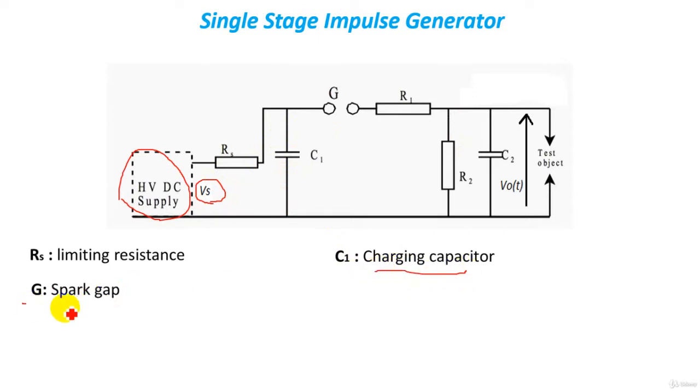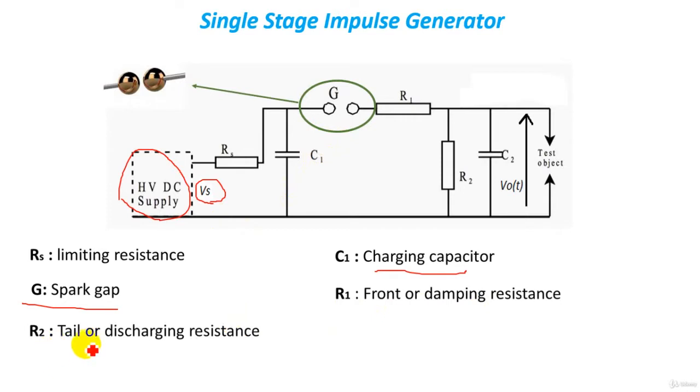We have also spark gap here. The spark gap here that was present in the Tesla coil acts as a controlled switch. Also we have R1 front or damping resistance and R2 tail or discharging resistance. Also we have C2 which is the load capacitance and the output voltage across the capacitor C2, so it's called load capacitor here.